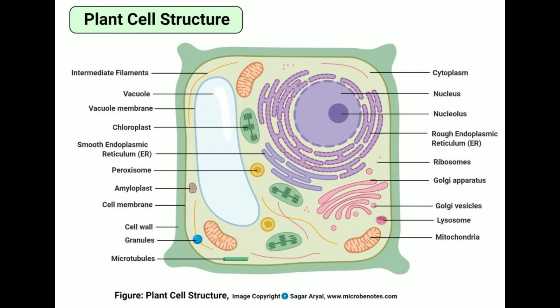The nucleus also houses a nucleolus that contains proteins making up the ribosomes and rRNA. In eukaryotic cells, the ribosomes are 80S type, containing 60S and 40S subunits. The larger subunit is composed of 5S RNA, 28S RNA, and proteins, whereas the smaller subunit is composed of 18S RNA and 33 proteins. Ribosomes in eukaryotic cells are found either attached to the rough endoplasmic reticulum or free in the cytoplasm.